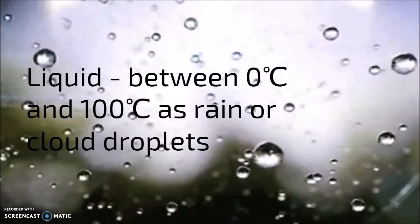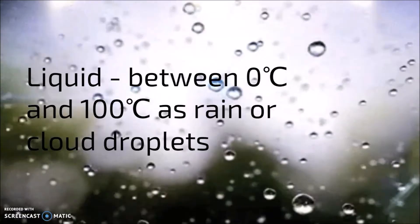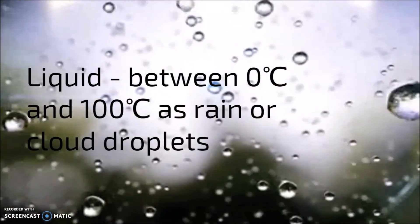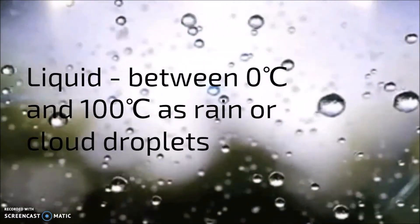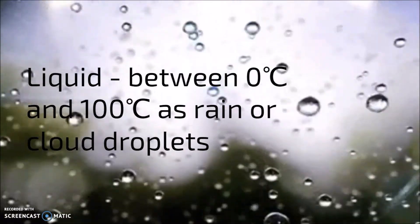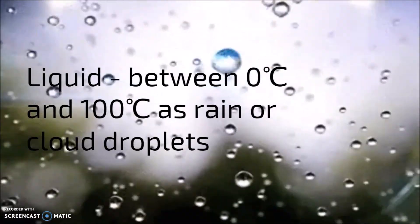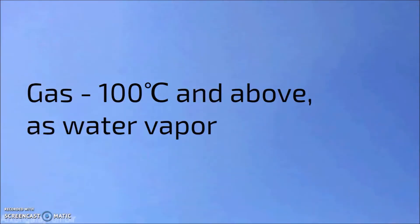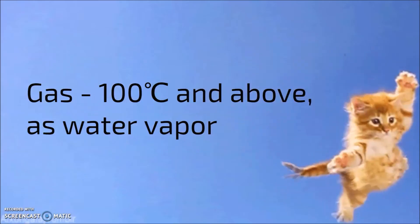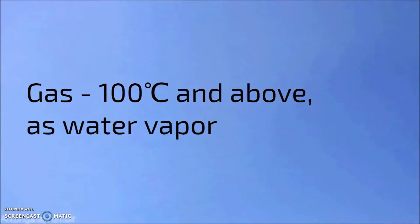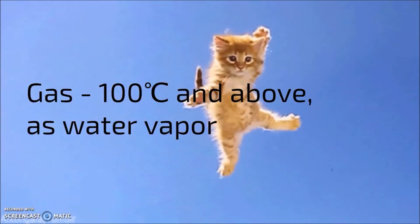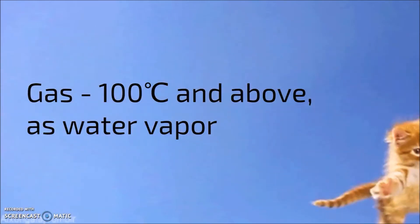Water will appear as liquid when the temperature is between zero degrees Celsius and 100 degrees Celsius, and will appear in nature as rain or cloud droplets. And finally, water will appear as gas when the temperature is 100 degrees Celsius and above, and will appear as water vapor.